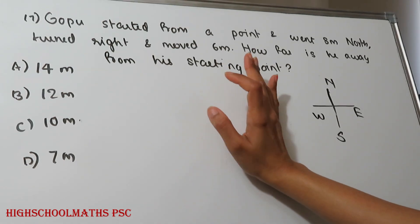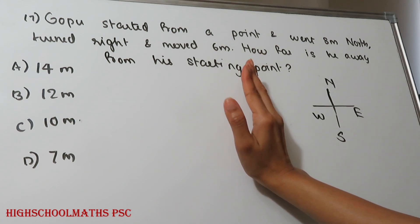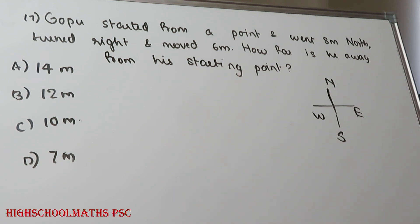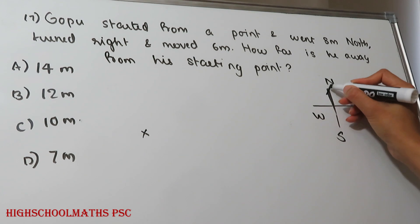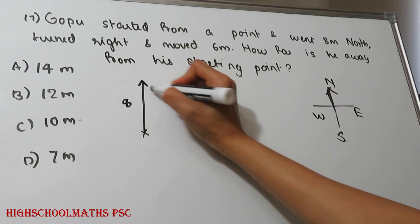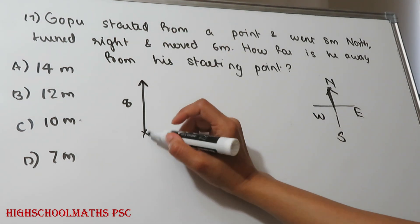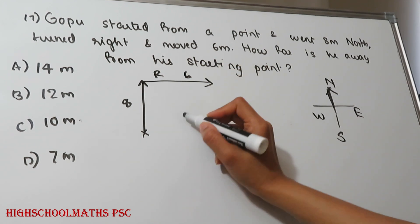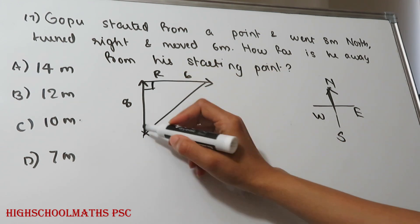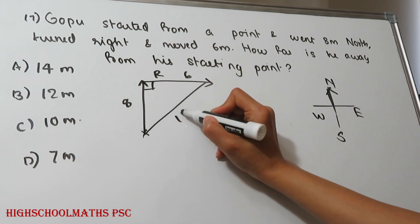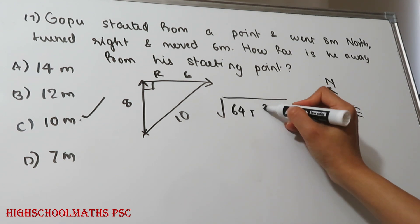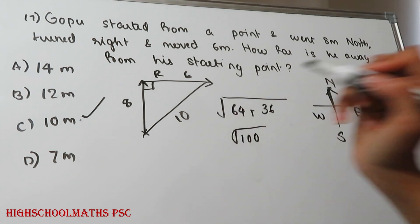Question number 17: Gobu started from a point and went 8 meters north, then turned right and moved 6 meters. How far is he from his starting point? Gobu went 8 meters north, then 6 meters east (right turn). Using the Pythagorean theorem: the distance equals the square root of 8 squared plus 6 squared, which equals the square root of 64 plus 36, giving 10 meters. Option C.